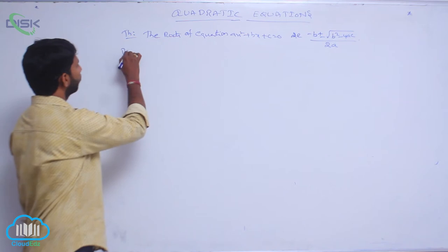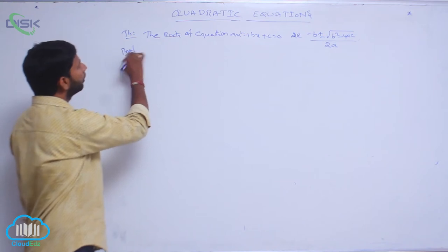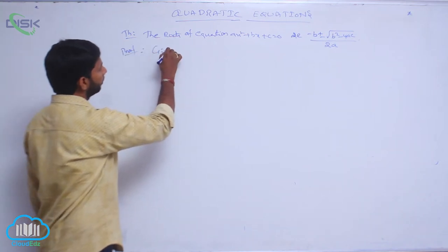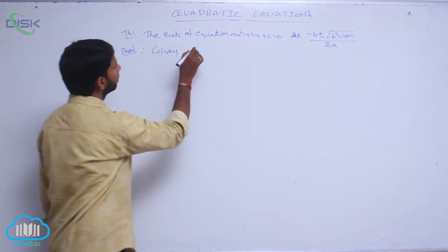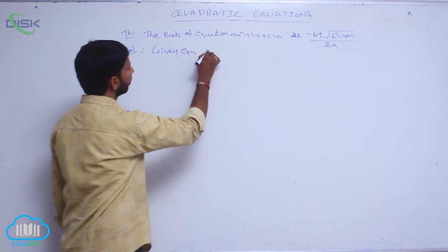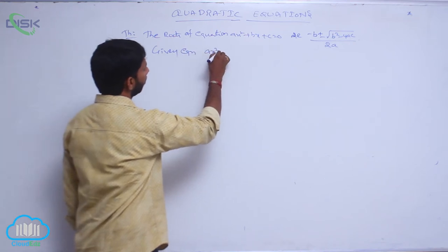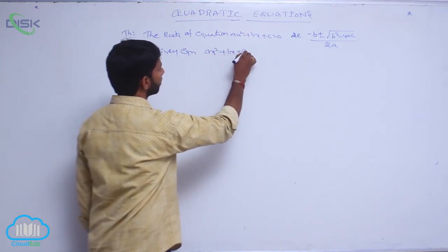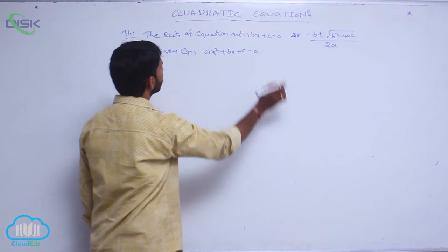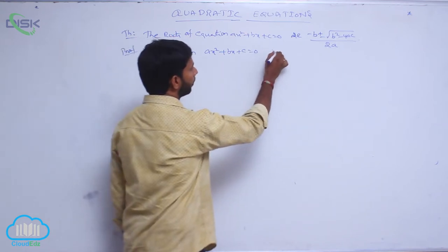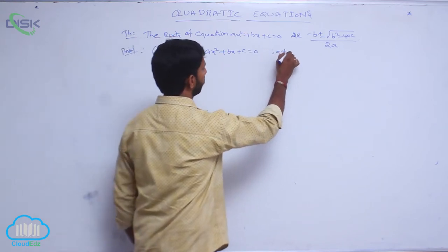This is a proof. The given equation is Ax² + Bx + C = 0, where A ≠ 0.